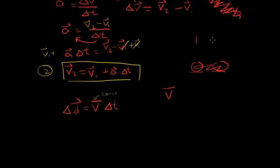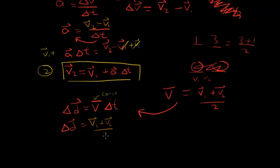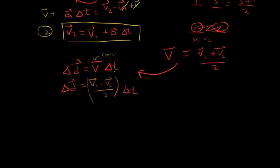Let's say we have a number one and three — how do you find the average? You add them all up and divide by the number of them. Same thing here: we have v1 and v2, so we add them both up and divide by two. We can substitute this back in for constant velocity, since average velocity is just the average of the two velocities. So: Δd equals (v1 + v2)/2 times Δt. This is our third equation.